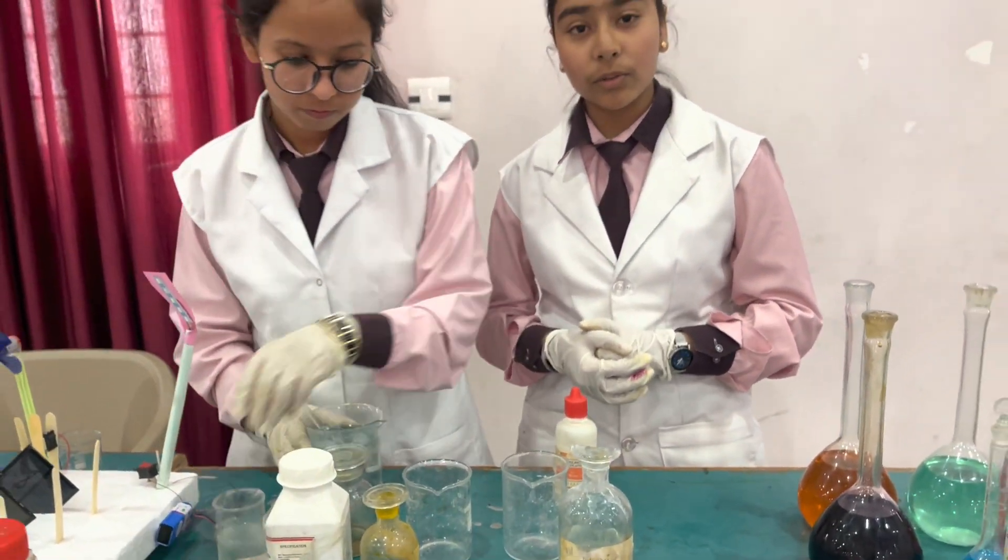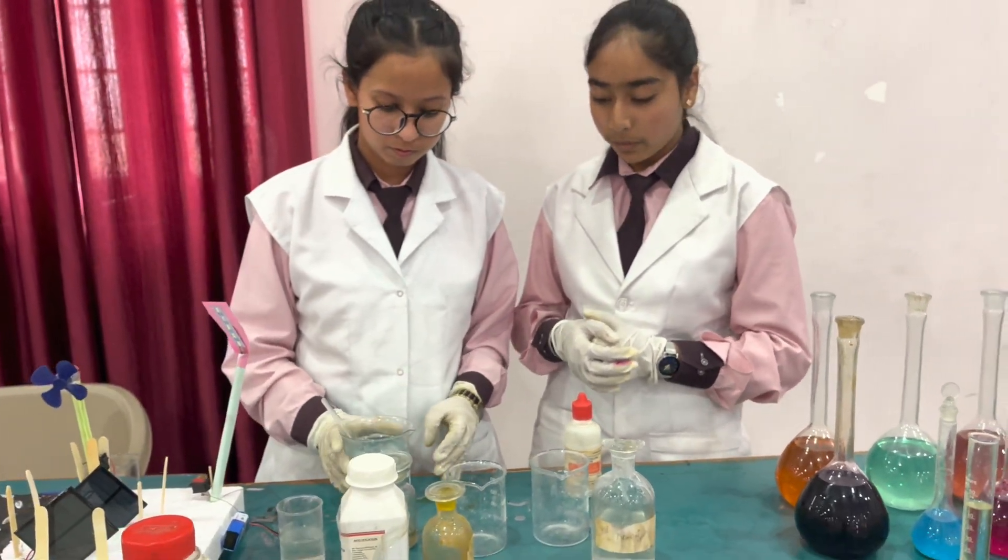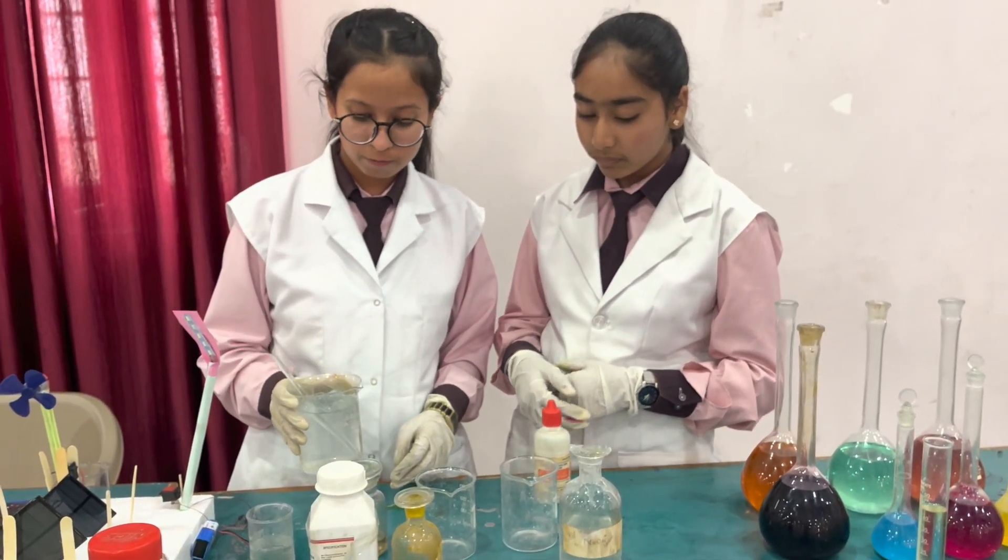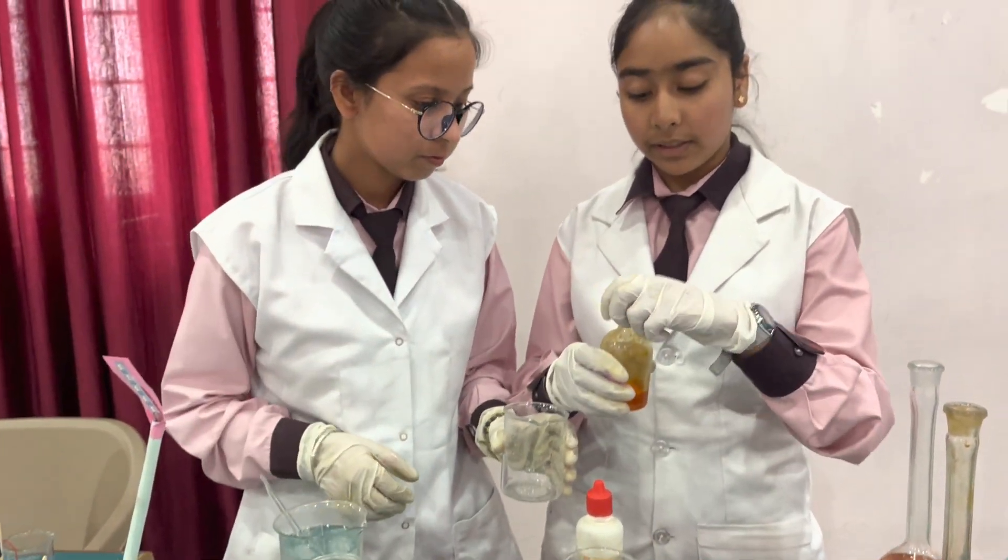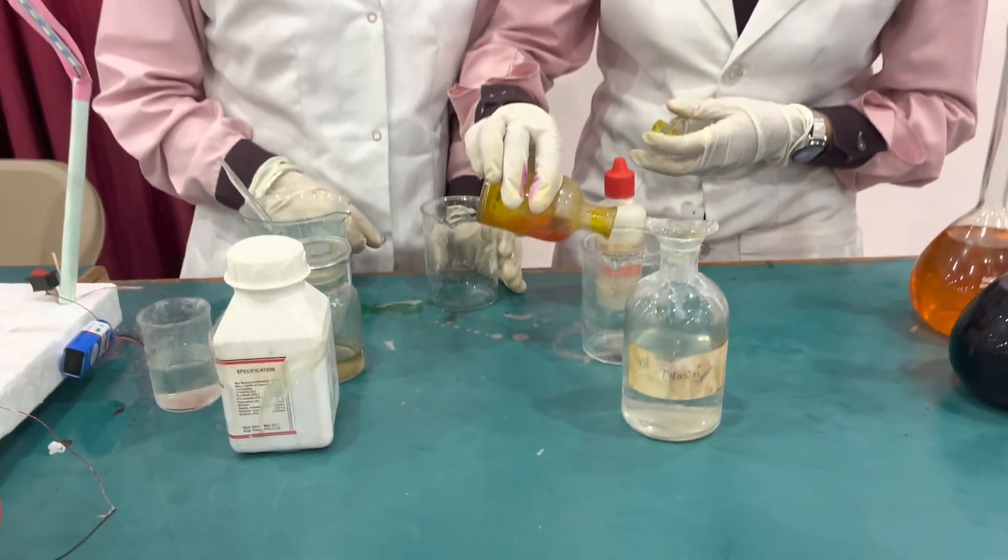Now we are going to do another experiment on reversible processes. We made a solution of NaOH. We will take another beaker and add potassium dichromate to it.